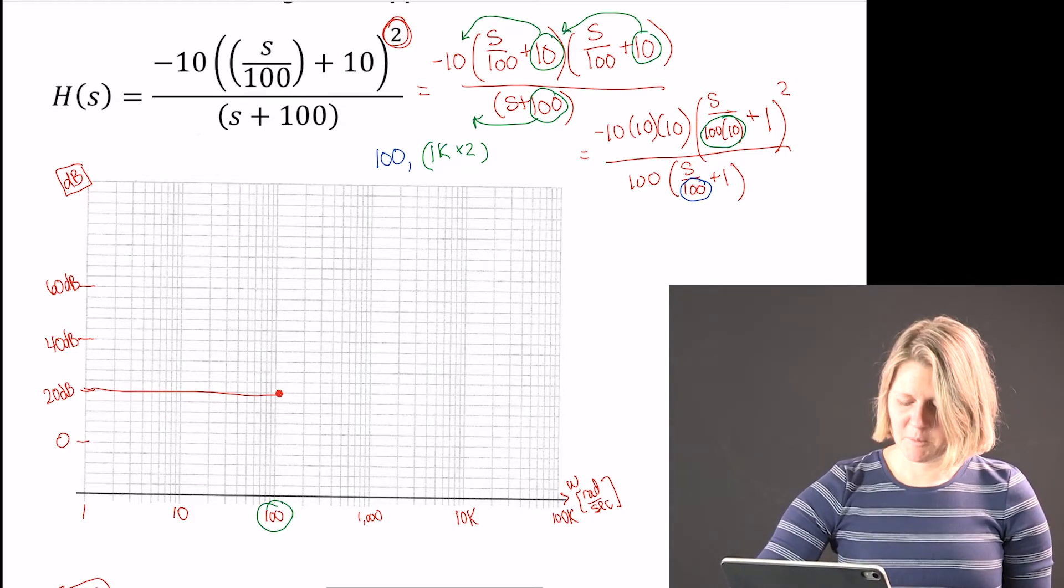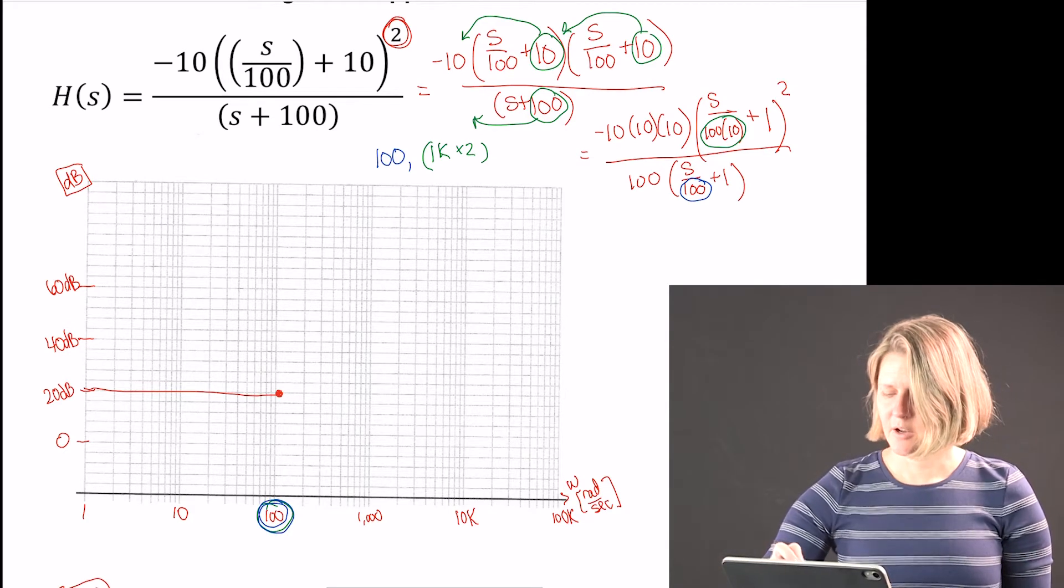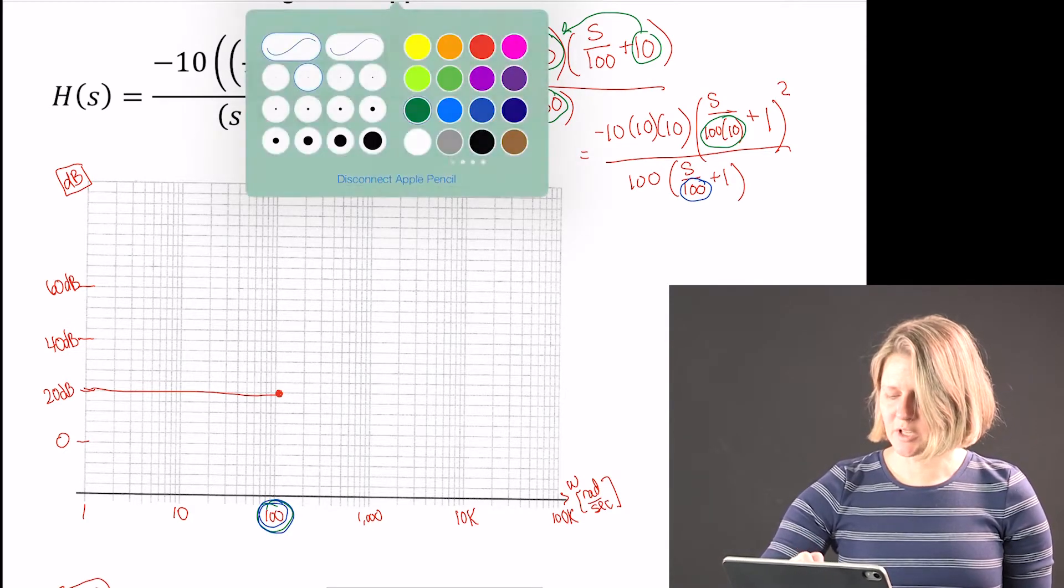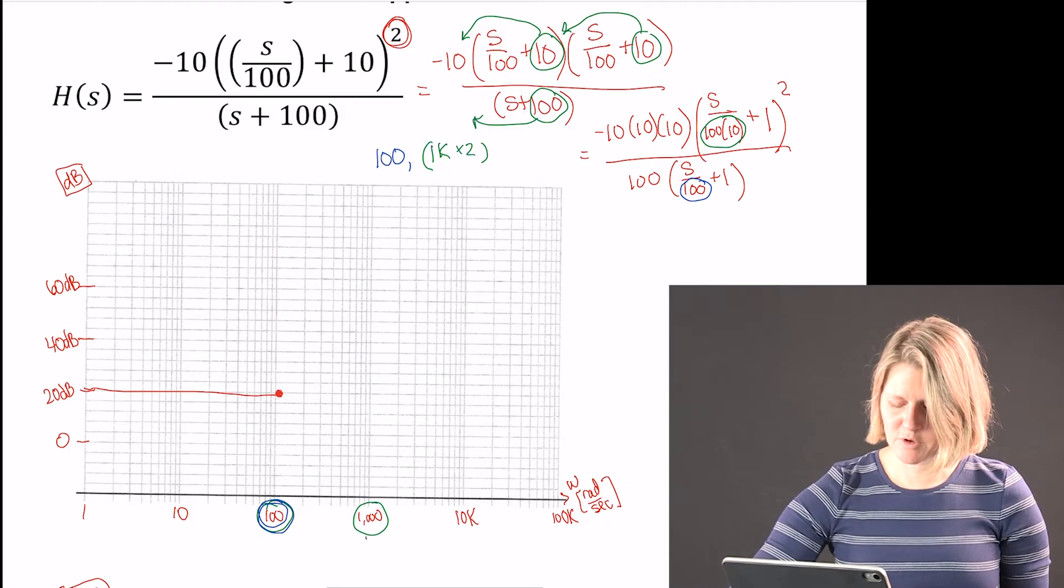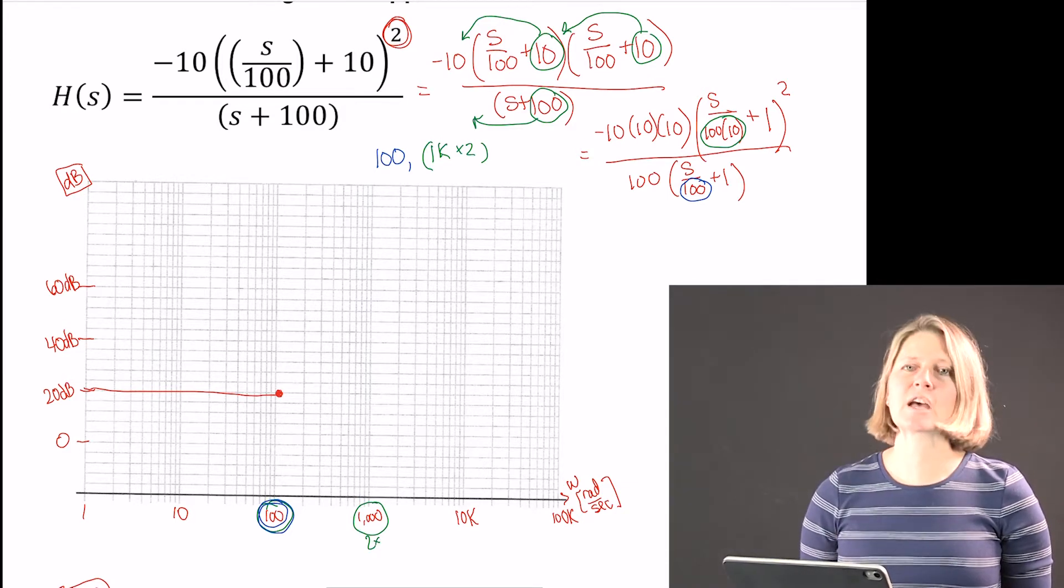I have at 100 I have a pole and at 1k I have two. So I'm going to do a two times at that 1000.